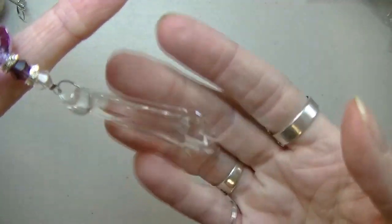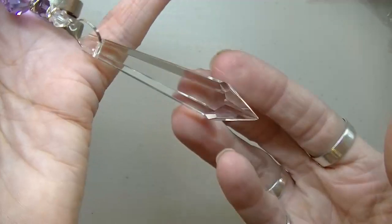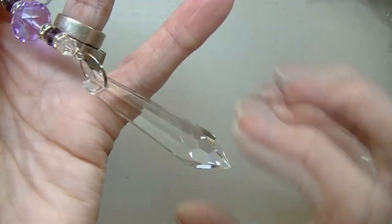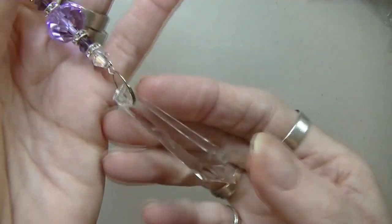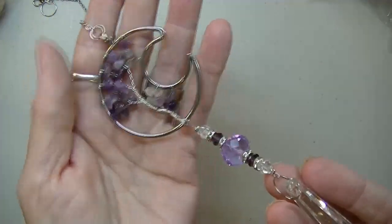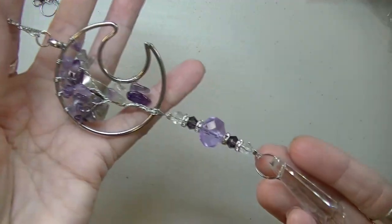The next one is beautiful too. It's a crescent moon and this has amethyst. These are real crystals, like the crystals that you put in your chandeliers.